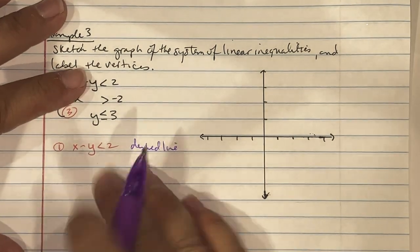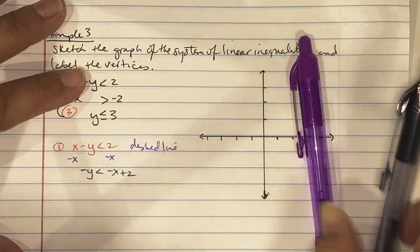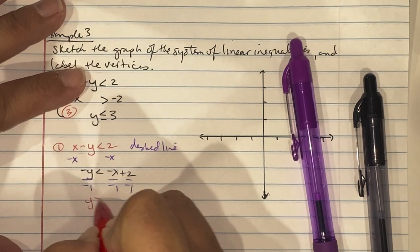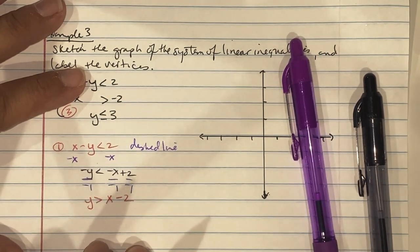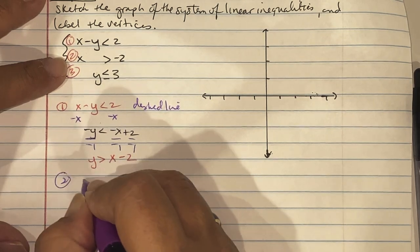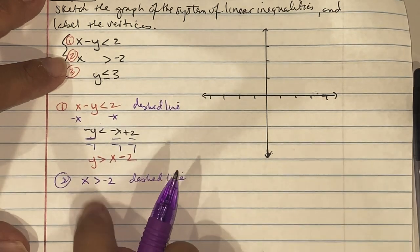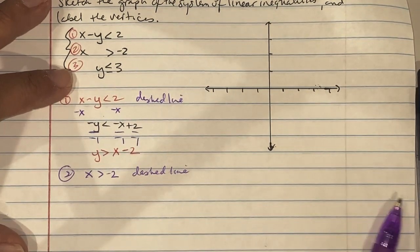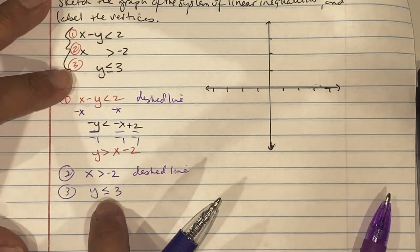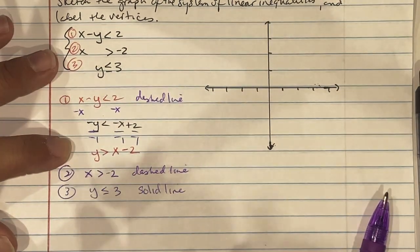For equation 1, x minus y less than 2: notice there's no equal sign so it will be a dashed line. Subtract x to get negative y less than negative x plus 2, divide by negative 1 and flip the inequality, giving y greater than x minus 2. Equation 2, x greater than negative 2: no equal sign means dashed, and nothing to solve — all x values must be bigger than negative 2. Equation 3, y less than or equal to 3: this has the equal sign so it will be a solid line.